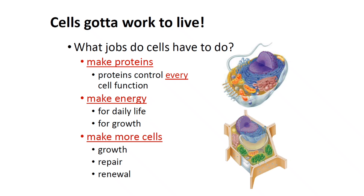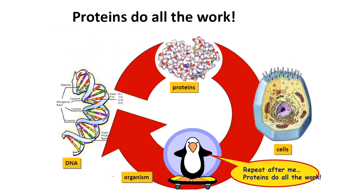Cells need to work to live. One of their main jobs is making protein — protein controls every cell function. The units of protein are amino acids, which are essential for life. Protein is needed for energy, daily growth, and making more cells. For protein synthesis, RNA and ribosomes play very important roles — star mark them both.